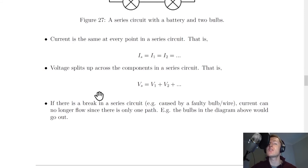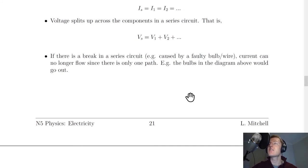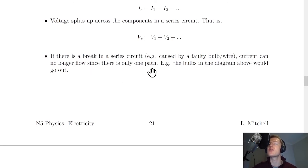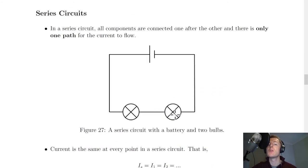To summarize our two rules for series circuits: current is the same at all points, and the voltages across the components add up to give the supply voltage. A disadvantage of series circuits is that if there is a break — for example caused by a faulty bulb or wire — current can no longer flow since there is only one path. If one bulb becomes faulty, it creates a break and both bulbs go out.